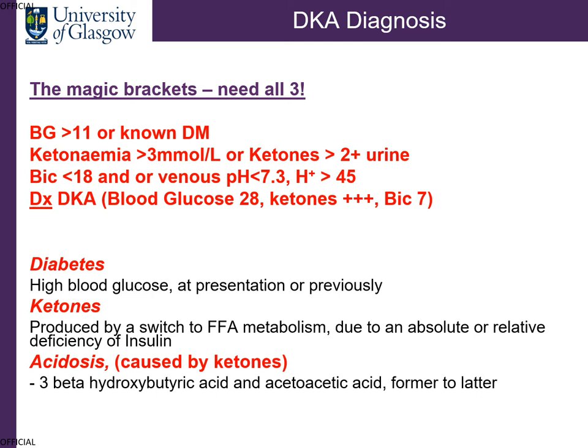To diagnose diabetic ketoacidosis you need a clinical scenario of high blood sugars with biochemical criteria also met. These focus on three specifics: high blood sugars, usually over 11 or known diabetes; ketonemia or increased blood ketone levels of more than 3 mmol/L on finger prick, or more than two pluses in the urine; and acidosis, meaning a bicarbonate of less than 18. Bicarbonate is the buffer for acids in the blood, so a low bicarbonate reflects increased buffering activity due to increased acidity, or a pH of less than 7.3, or hydrogen ions of more than 45 nanomoles per litre. You need all three to have a diagnosis of diabetic ketoacidosis.